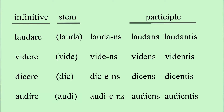We add the letters 'ns' to 'vide' and we have videns. And from dicere we can have dicens. And from audire we have audiens. So laudans is 'praising', videns is 'seeing', dicens is 'saying', and audiens is 'hearing'.